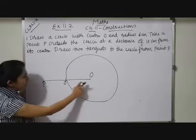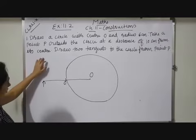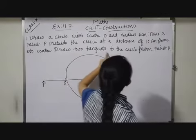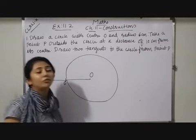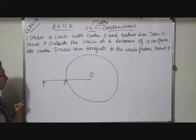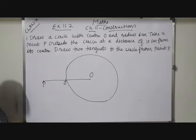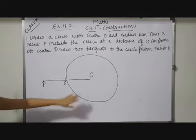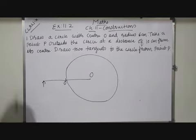Now after completing this what we have to do? Draw two tangents to the circle from point P. Now from point P I have to draw two tangents of this circle. So that time what I have to do?